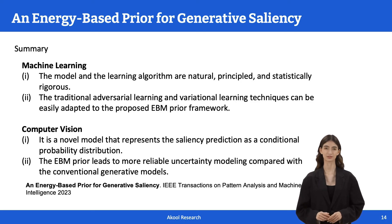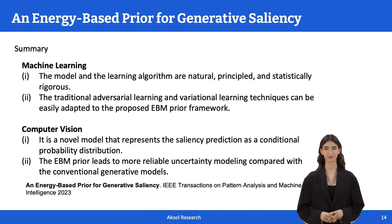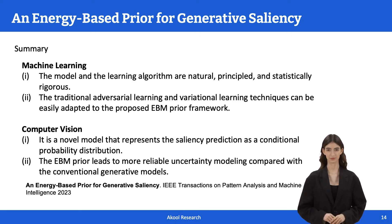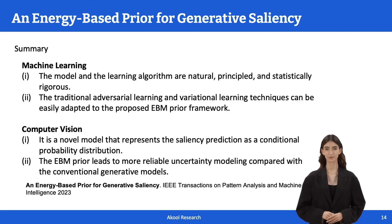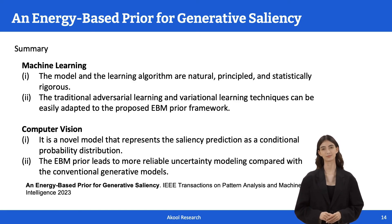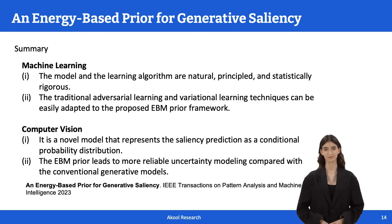On the other hand, traditional adversarial learning and variational learning techniques can be easily adapted to the proposed EBM prior-based generative model, bringing benefits of good performance and fast inference respectively. From the computer vision perspective, our model with a special network designed to handle saliency prediction is a new member of the family of saliency prediction methods. In comparison with traditional discriminative methods, our generative method naturally models saliency prediction as a conditional probability distribution, and the EBM prior leads to more reliable uncertainty modeling. For more information, please refer to the paper. Thanks for your listening.